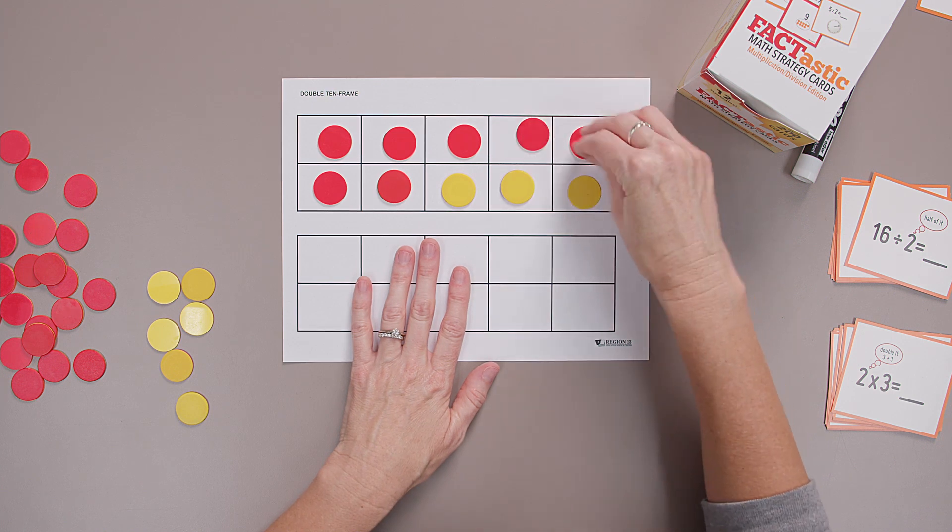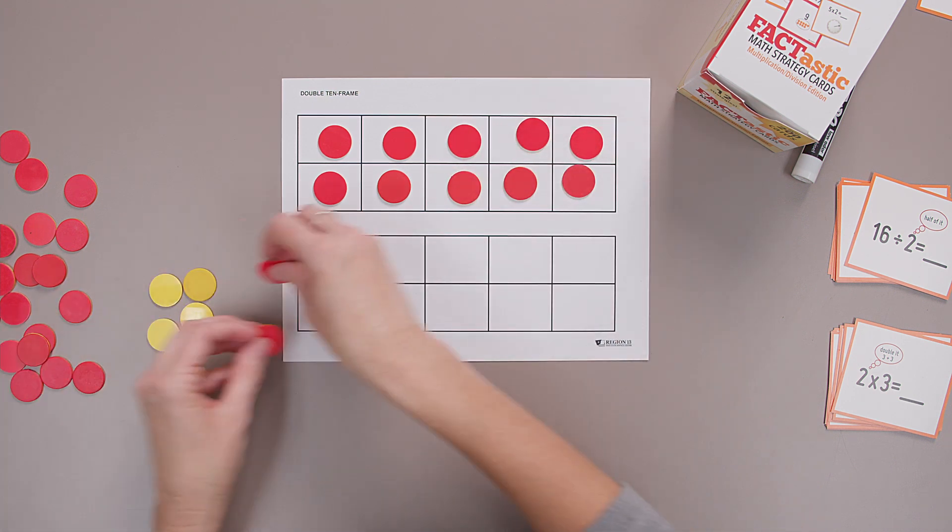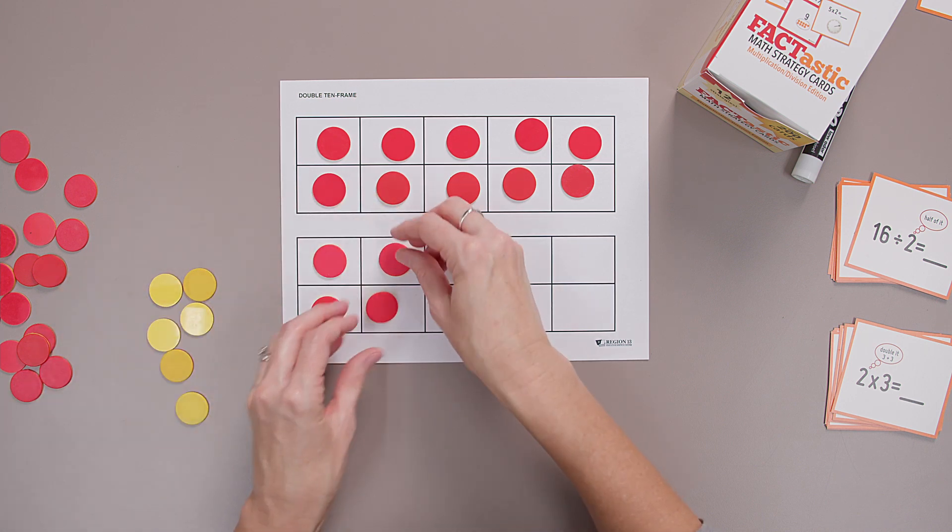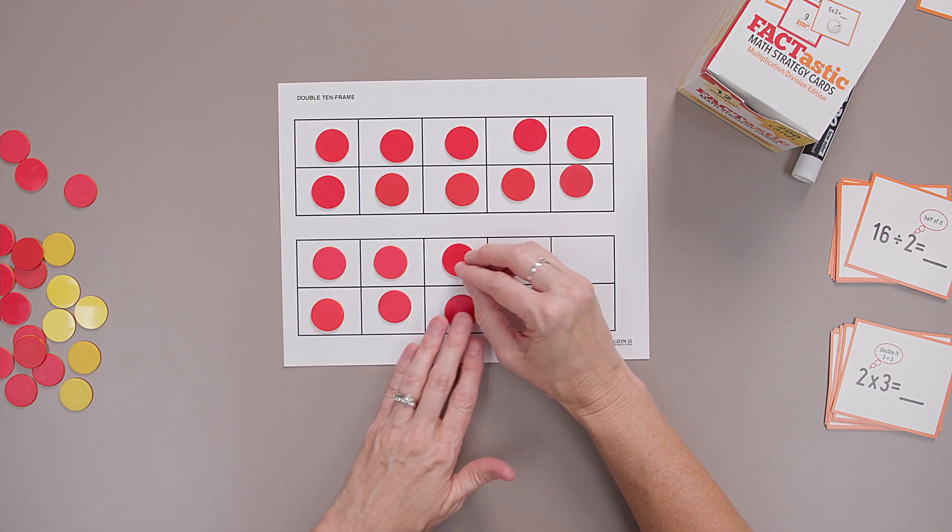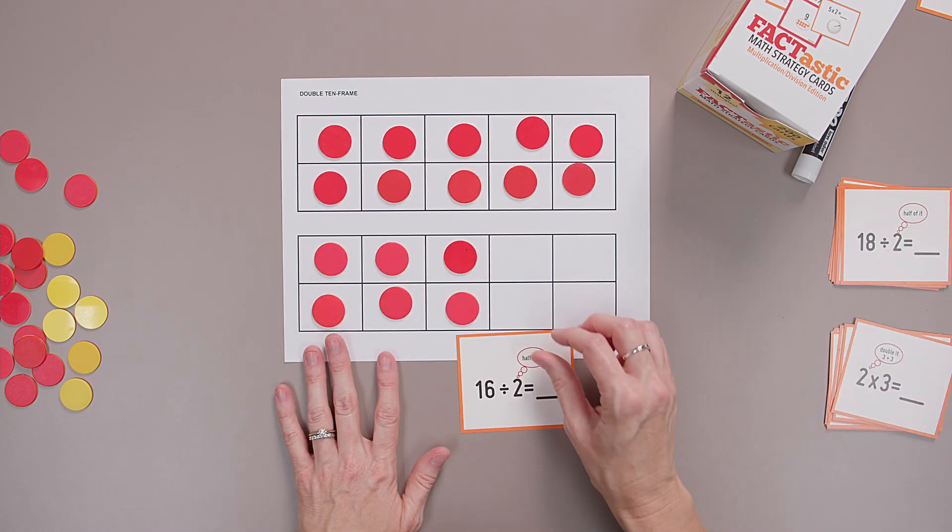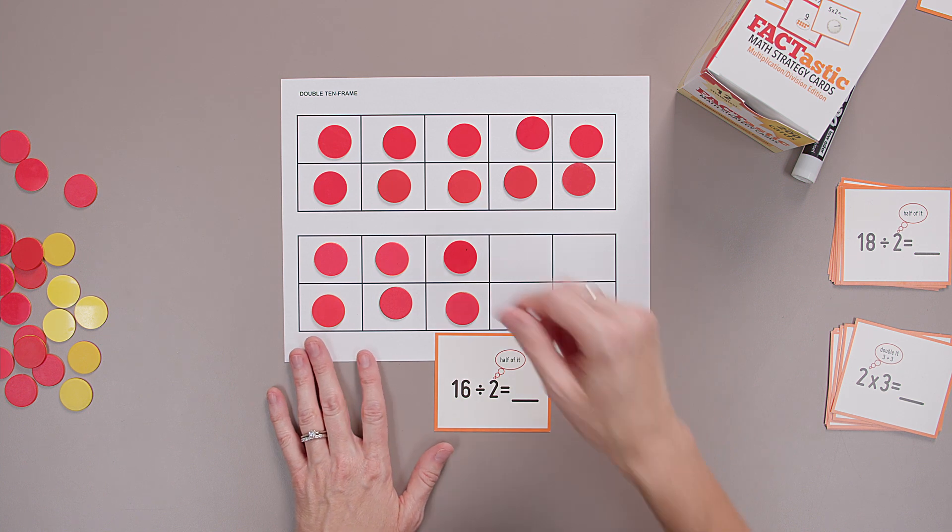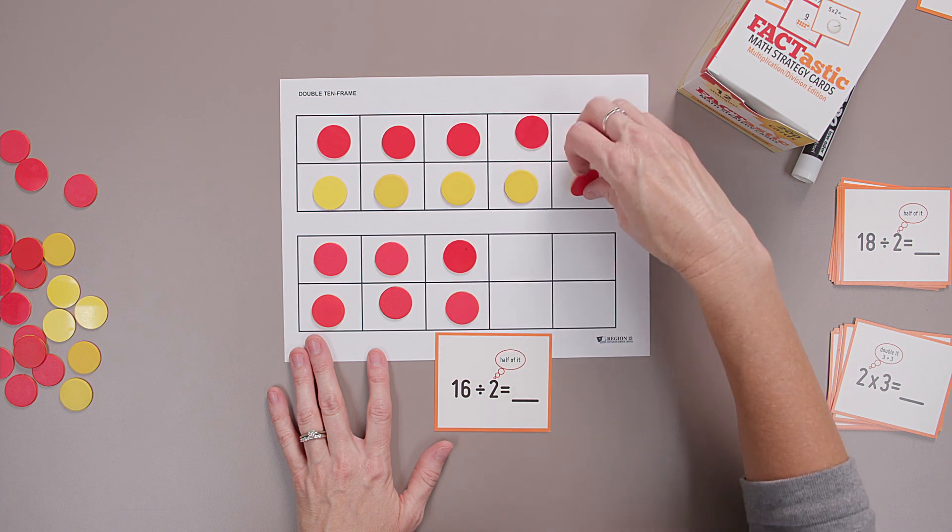Let's try one more for division. I'm going to build sixteen this time. It's twelve and that's fourteen and sixteen. Now I'm going to do sixteen divided by two. Divide by two means to half. I'm going to turn over half of the red to yellow.